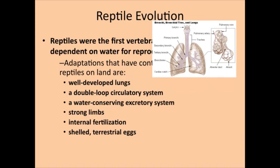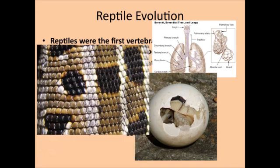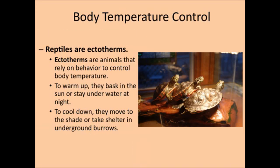Internal fertilization — this is the first time we see internal fertilization in vertebrates. And lastly, a shelled terrestrial egg that does not rely on water. And so there's an example of that amniotic egg and dry, scaly skin.